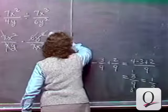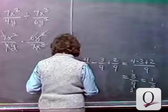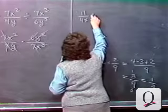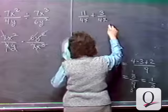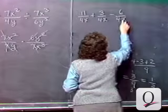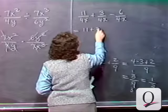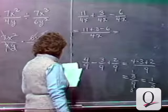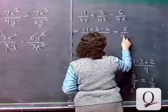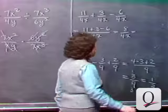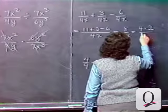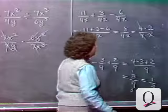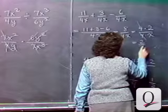The same idea applies to algebraic fractions. For example, 11 over 4x plus 3 over 4x minus 6 over 4x gives 11 plus 3 minus 6 over 4x, which is 8 over 4x. Since 8 is 4 times 2, dividing numerator and denominator by 4 gives a final answer of 2 over x.